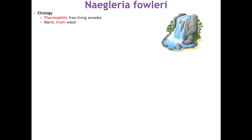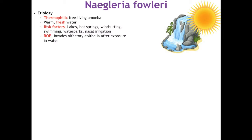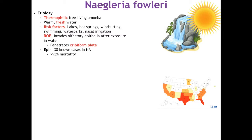Now for the true brain-eating amoeba: Naegleria fowleri. She is a thermophilic free-living amoeba, meaning she thrives in high temperatures — specifically warm fresh waters. Risk factors include lakes and hot springs, and activities exposing you to those bodies of water like windsurfing or swimming. Route of entry is via the nose: Naegleria goes through the nose, invades the olfactory epithelia, and follows it through the cribriform plate up to the frontal lobe. Since 1960 there have been 138 known cases in North America with greater than 95% mortality — only four people have survived.